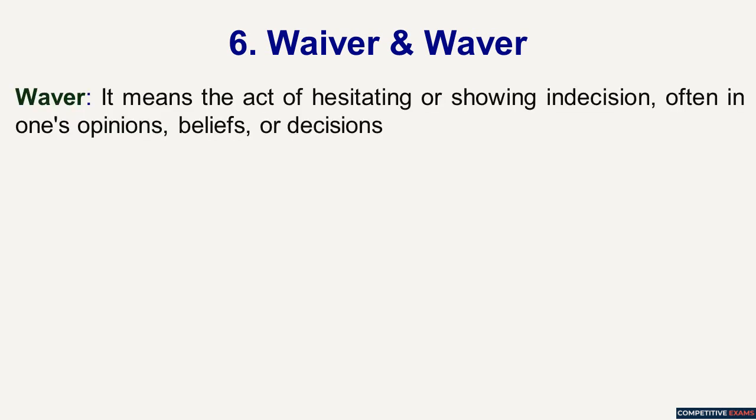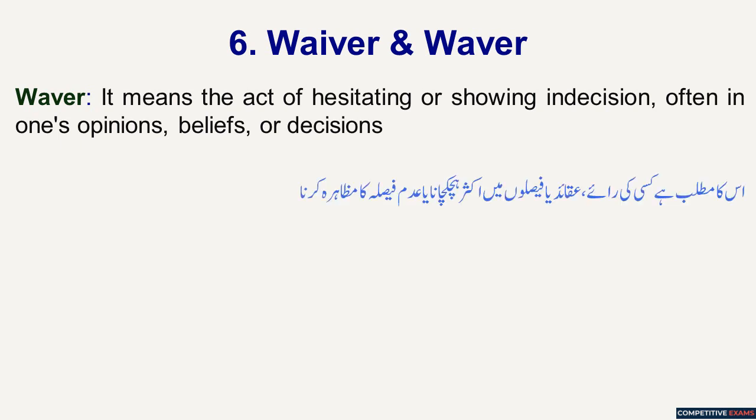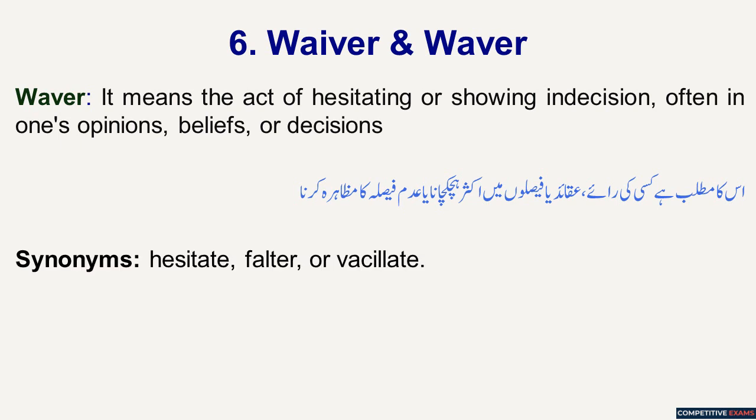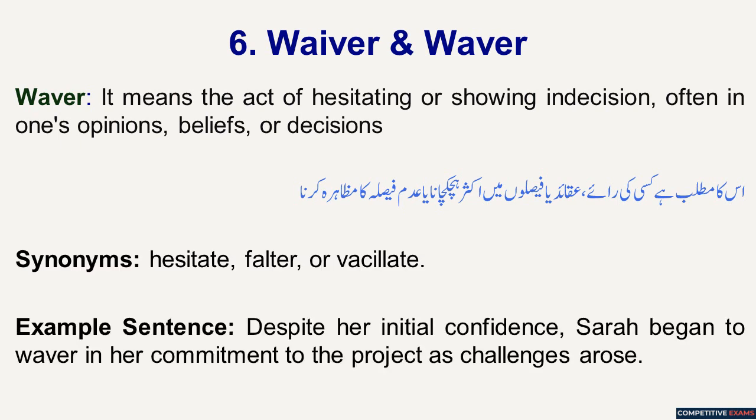Waver means the act of hesitating or showing indecision, often in one's opinions, beliefs, or decisions. In Urdu, kisi ki raay, aqaid ya faislon mein aksar hichkichana ya adam faislaha ka muzahira karna. Its synonyms are: hesitate, falter, or vacillate. Example sentence: Despite her initial confidence, Sarah began to waver in her commitment to the project as challenges arose.